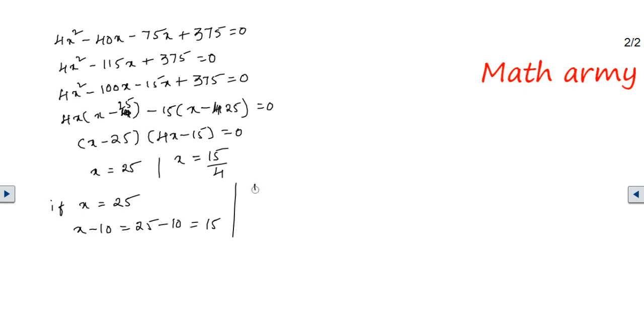What if X is equal to 15 by 4? X minus 10 would be 15 minus 40, all divided by 4. On calculating, I will be getting 15 minus 40 as the numerator, so here I am getting the number as negative. This situation is impossible to arise because the number of hours should always be in the positive term. So X is equal to 15 by 4 is not going to exist.